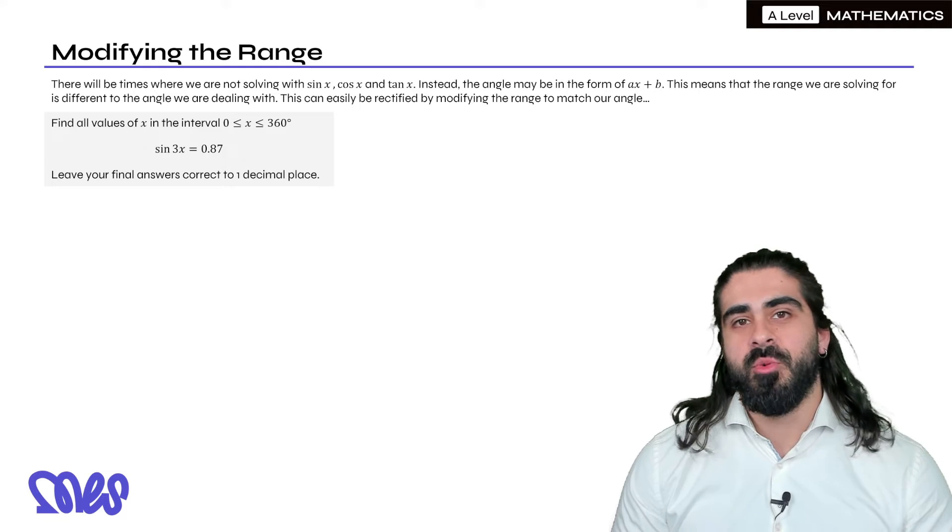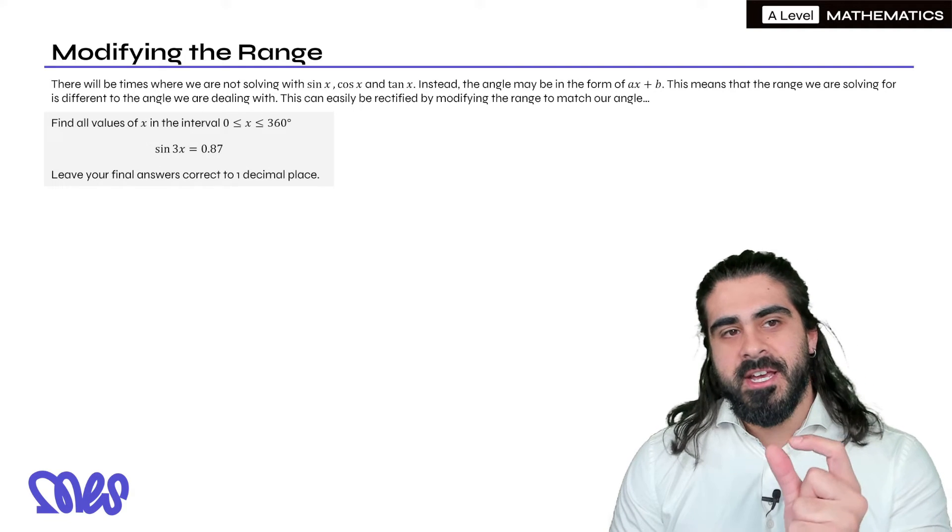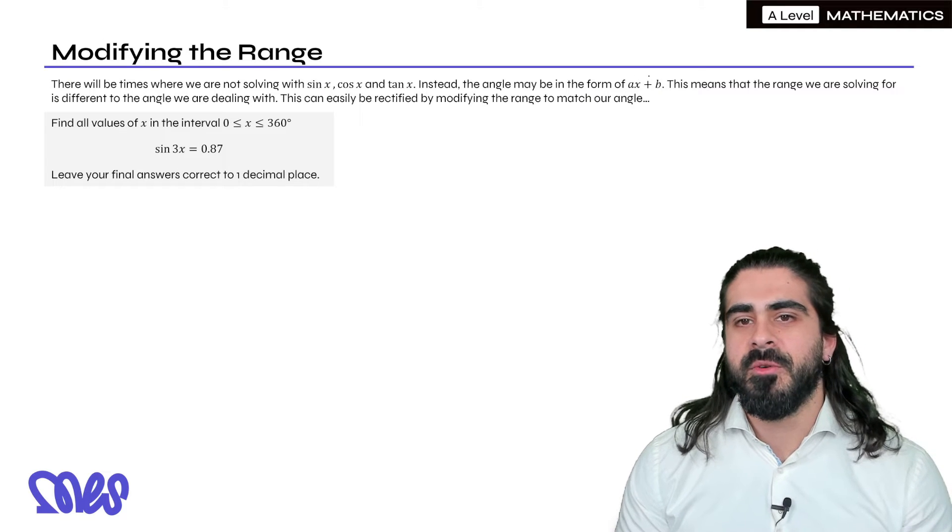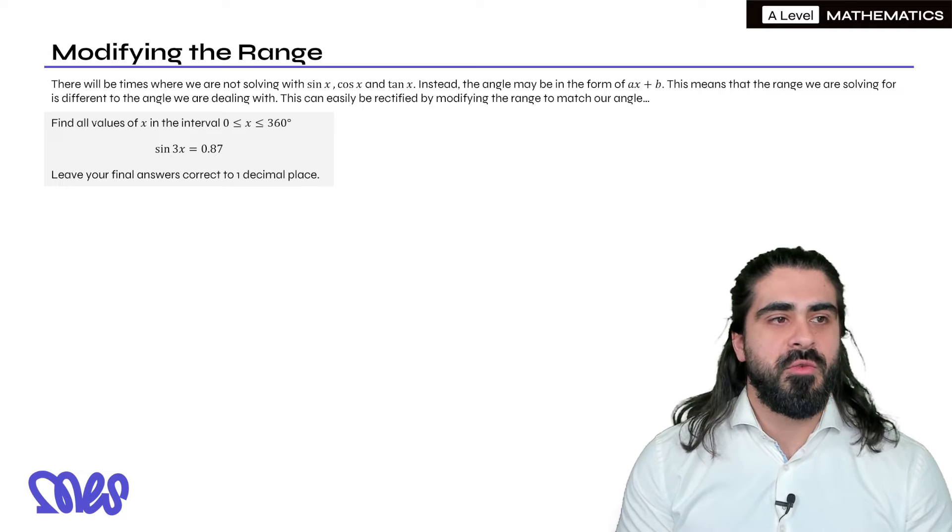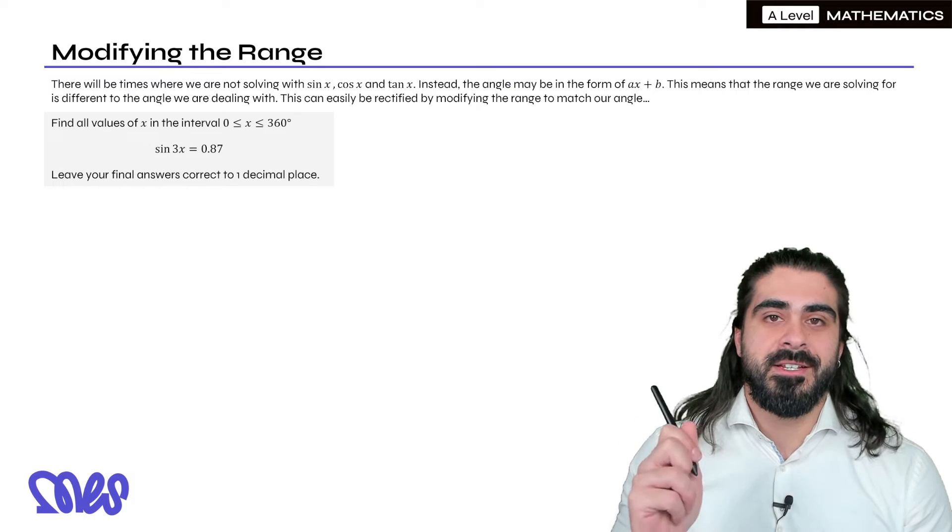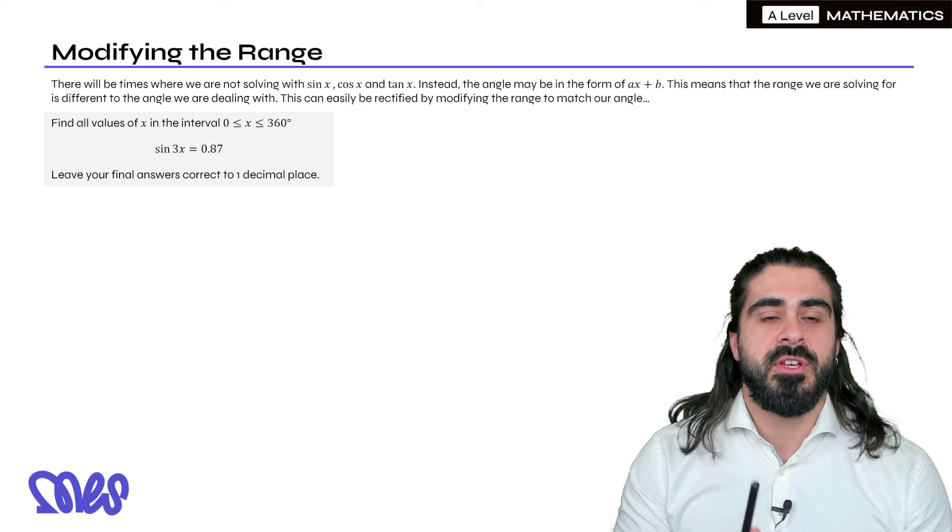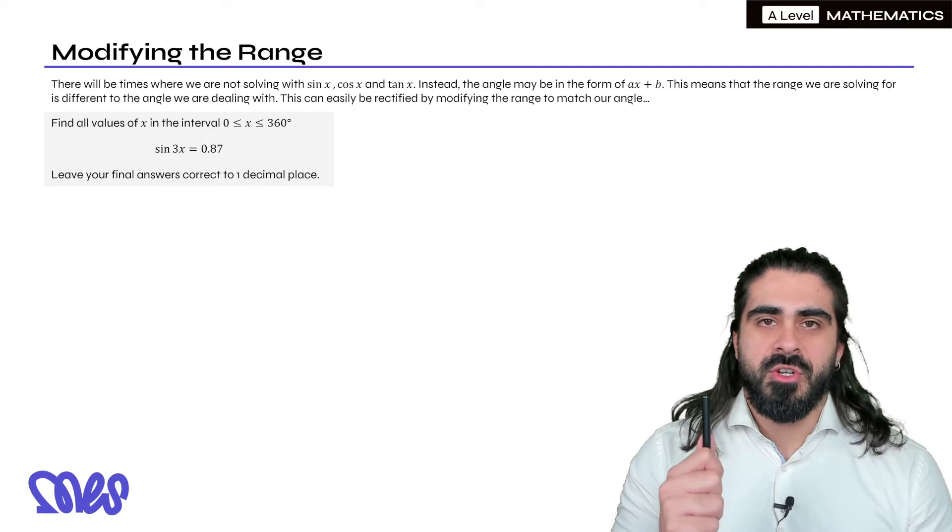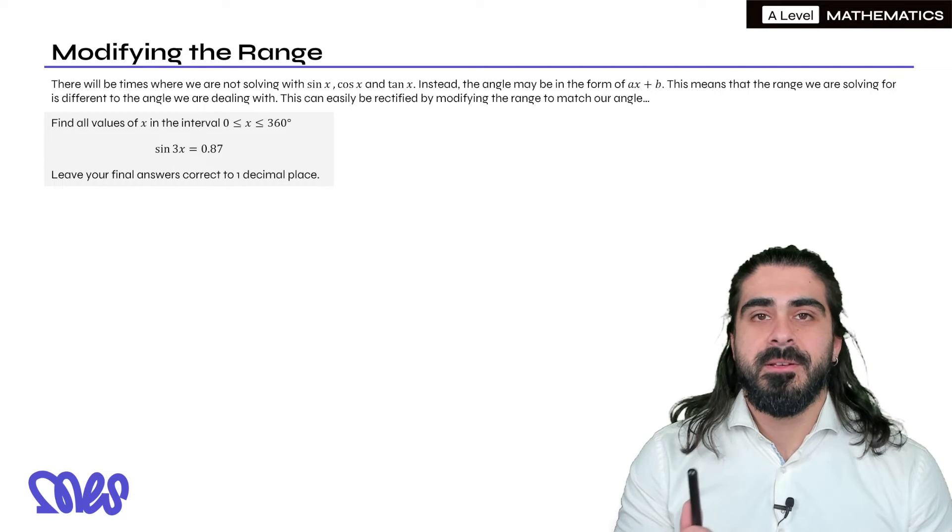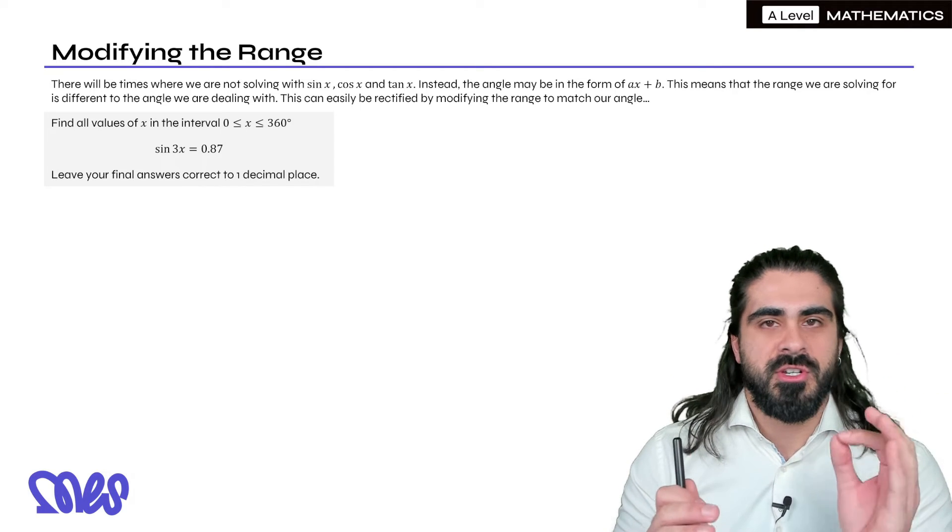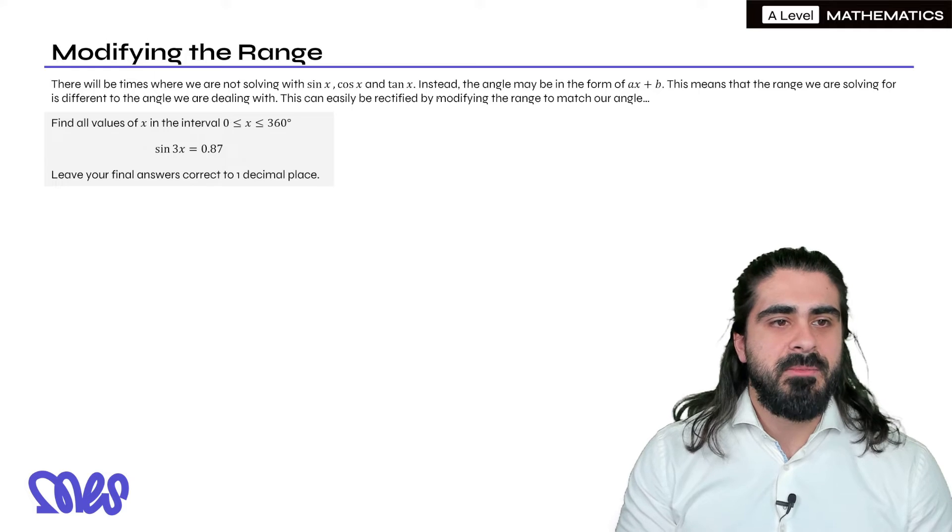We're going to deal with situations where the angle is not just x. So last episode we dealt with sine x, cos x, tan x. What about if the angle was in the form of ax plus b? This means that the range we are solving for is different to the angle we're dealing with. And this can easily be rectified by modifying the range. Now if you go back two episodes ago when I did sketching trig equations, we dealt with tan of x minus 45 or something similar to that. And I told you that a very simple way to sketch that is to modify the range and draw the tan graph within the modified range and then do the transformation so you don't draw too much. Same thing applies when solving.